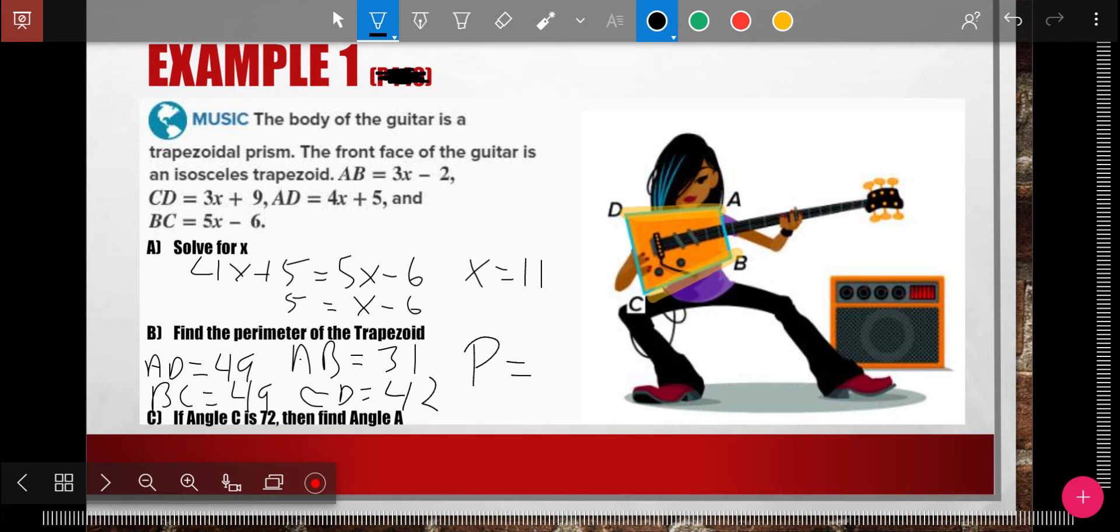And then the perimeter. Perimeter is all, in case you've forgotten. And you might want to write this down in your notes if you've forgotten. Perimeter is all of the outer edges, all of the outside sides added together. And so the perimeter here is 49 plus 49 plus 31 plus 42. Which my calculator here says is 171.